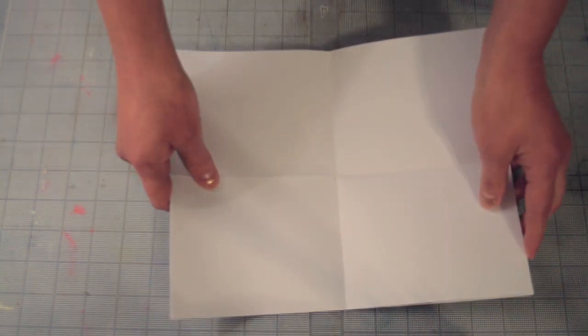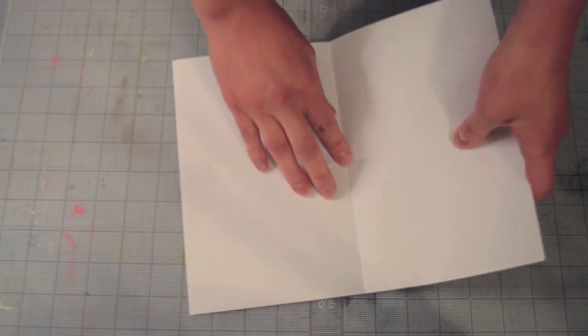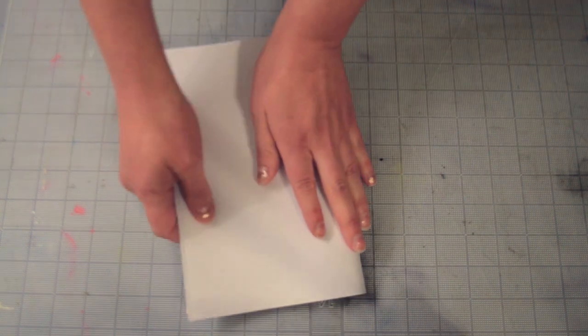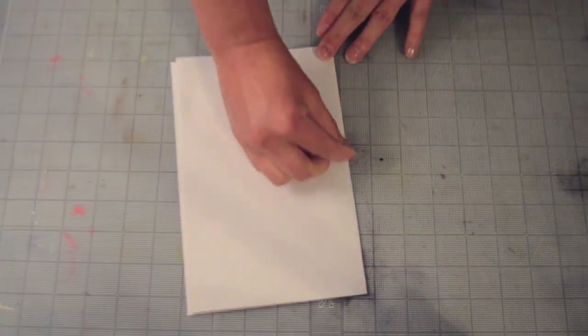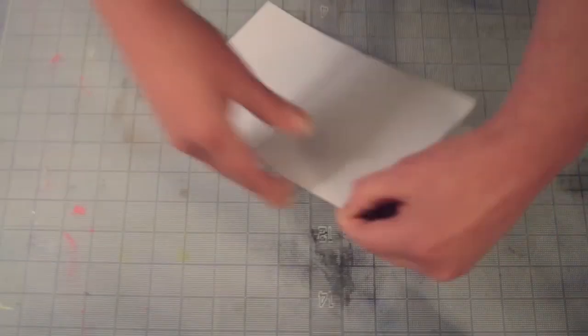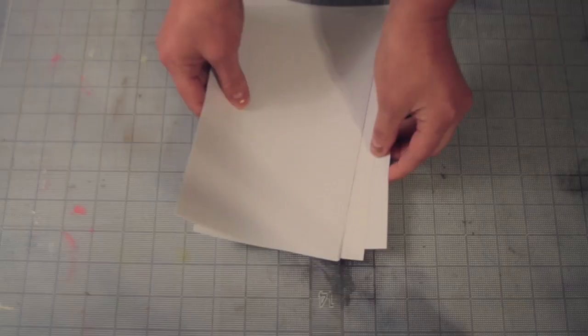So I think I'm going to do this quarter size, the smaller size. So I would start by taking a few sheets of paper and cutting them in half.